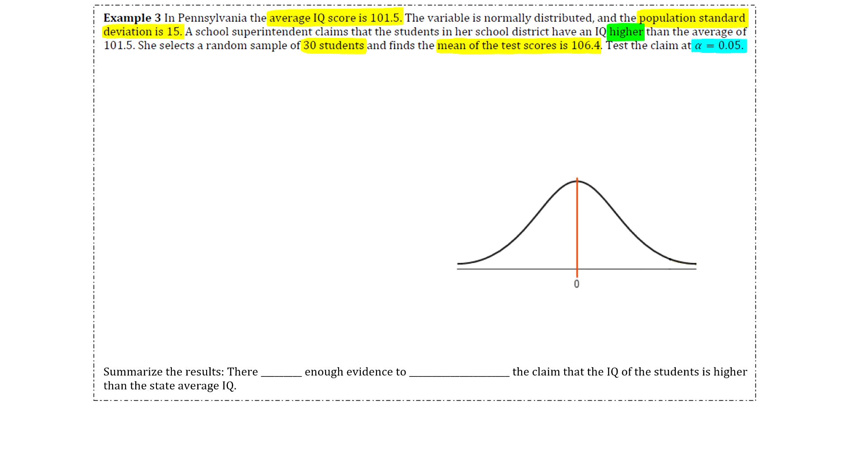We're going to test her claim with a level of significance of 0.05. I'm going to go through those steps that were on the previous page. Step one says that we need to state the hypotheses and identify the claim. We'll start with the null hypothesis. Remember from our last section, the null hypothesis is the one that always has the equal sign. You have to read through the question and see what they said the average is for the population. That's 101.5. So we'll say mu equals 101.5.